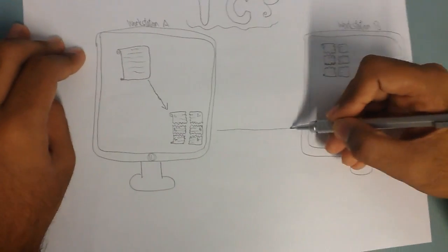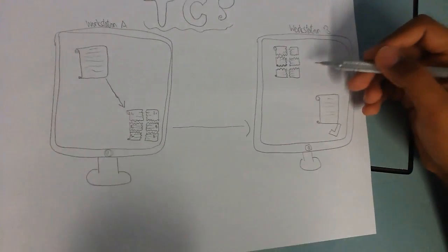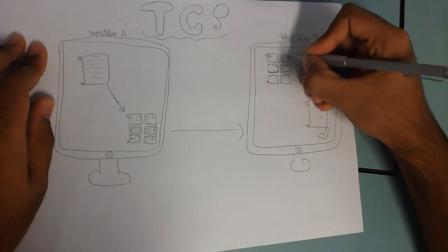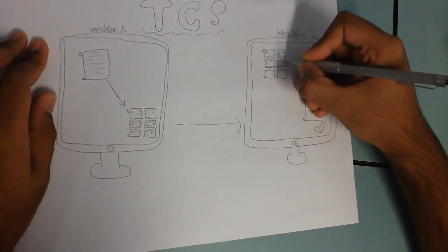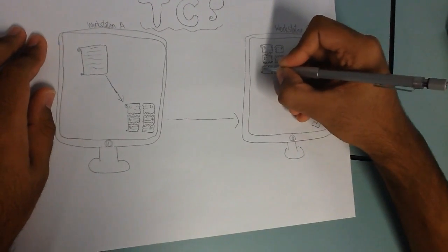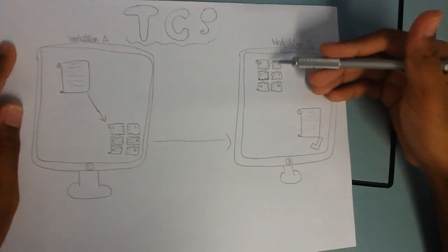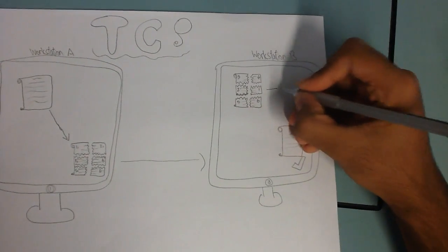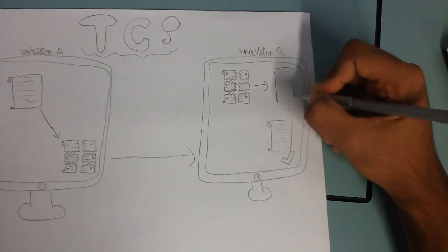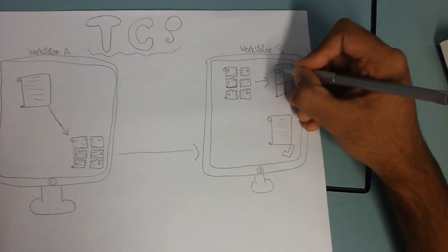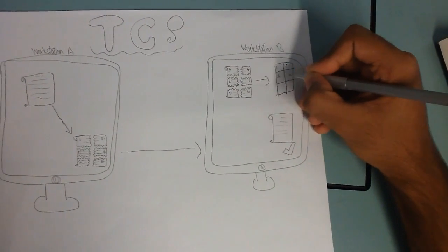Once the data is sent, once the second workstation receives the data, the numbers might be jumbled up like this: 3, 4, 2, 1, 6, 5. So what the TCP in the second workstation does is it reassembles it according to order, making it in order so as to reassemble.